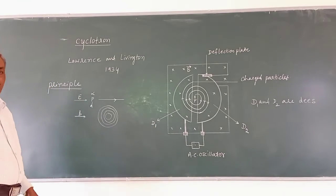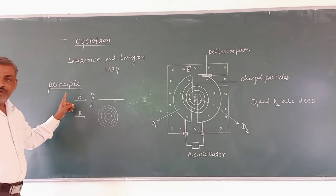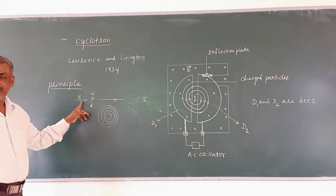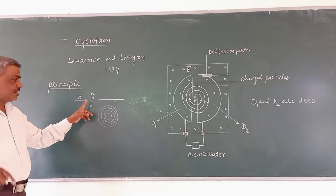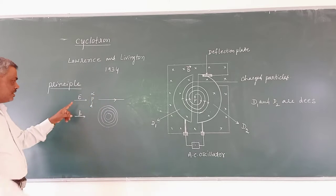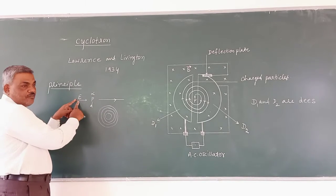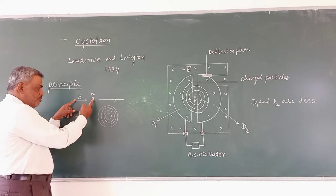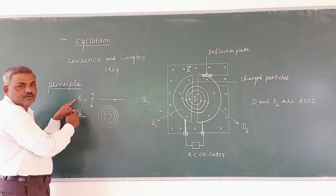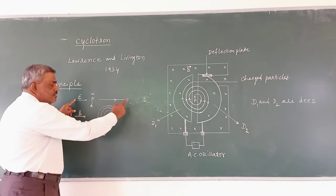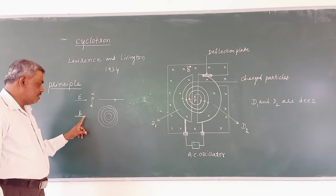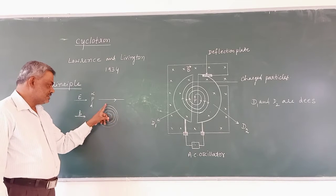The principle of the cyclotron: when electric and magnetic fields are mutually perpendicular to each other, the electric field makes the charged particles get accelerated, moving along a straight line. The magnetic field makes the charged particles move in a circular path.